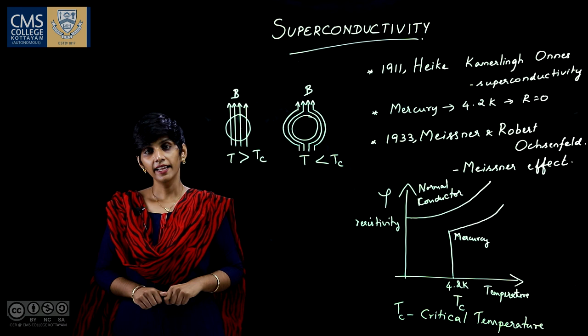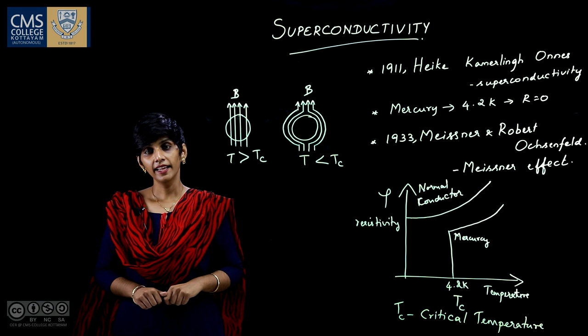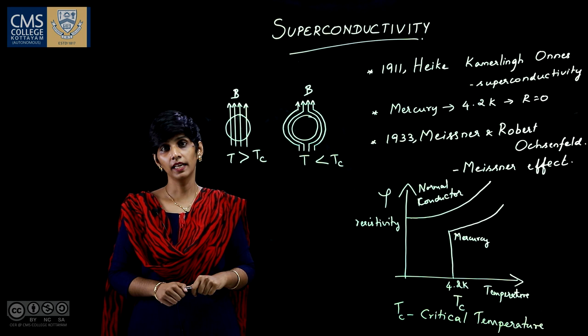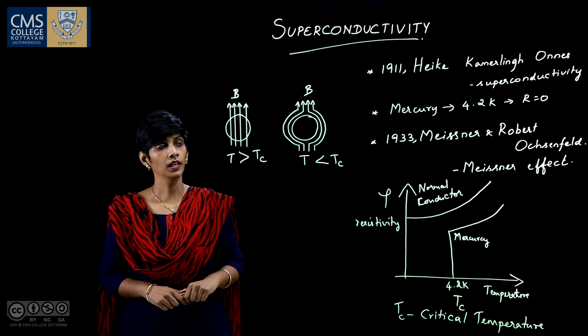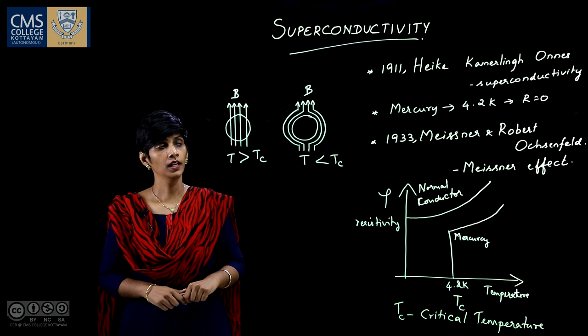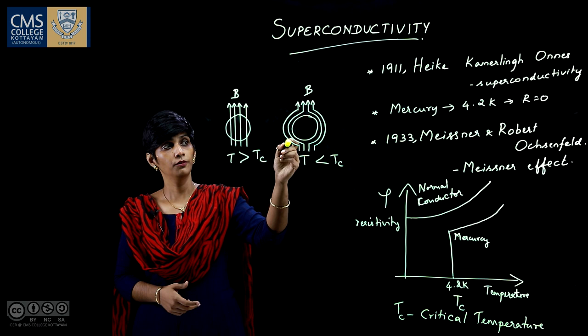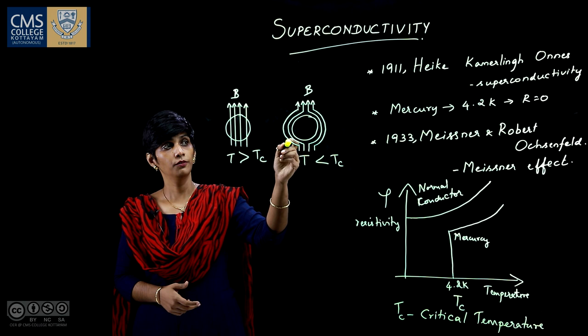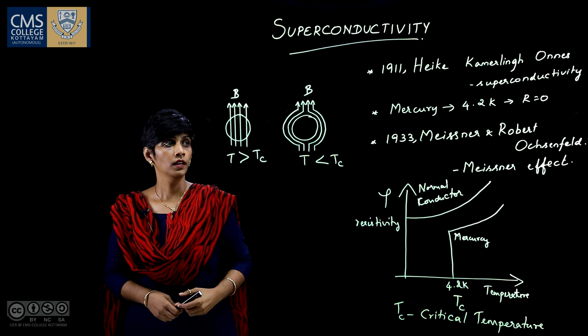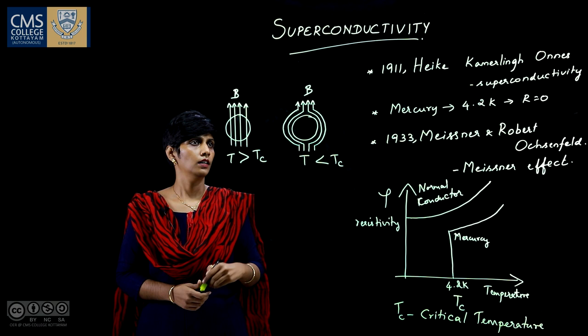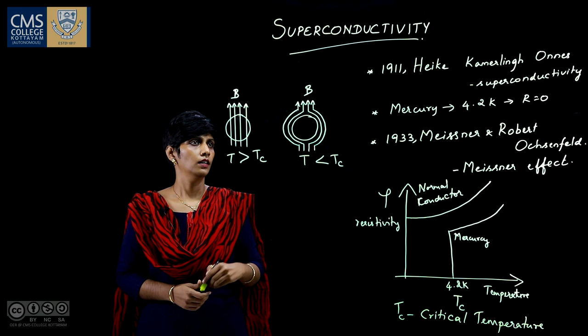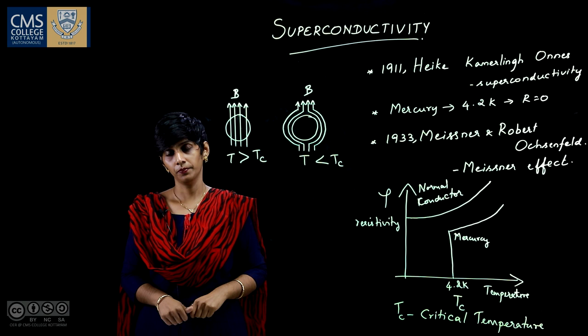The next discovery in superconductivity happened in 1933 by Meissner and Robert Ochsenfeld. They together discovered that superconducting materials repel magnetic fields. When a weak magnetic field is applied to a superconducting material kept below critical temperature, the magnetic flux lines are repelled by the superconducting material, and the magnetic field lines bend across it. This phenomenon, in which superconducting materials repel magnetic field lines, is called the Meissner effect.